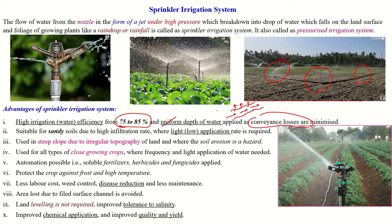This system is well suitable for sandy soil which has a high infiltration rate, and it is most applicable where light or low application of water is required. The system is well suited for steep slope or undulated irregular topographic areas and where soil erosion problems exist. This type of system is more suitable for close growing crops and where frequent and light application of water is required. Automation is possible, meaning we can use soluble fertilizers and herbicides through the water application from the sprinkler system.